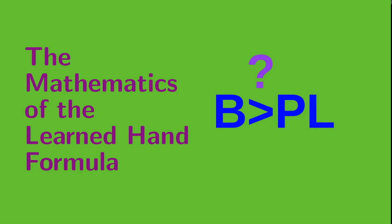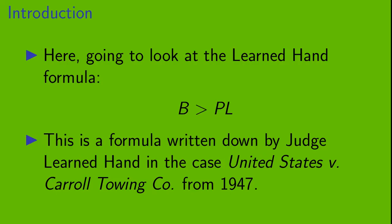Welcome to The Mathematics of the Learned Hand Formula. In this video we're going to be looking at the Learned Hand Formula, which is this possibly mysterious-looking expression that involves the quantities B, P, and L. This is a formula that was written down by Judge Learned Hand in the case United States v. Carroll Towing Company, in 1947.